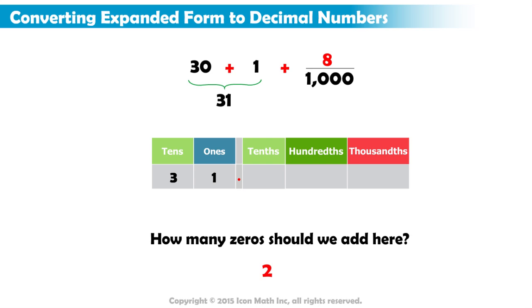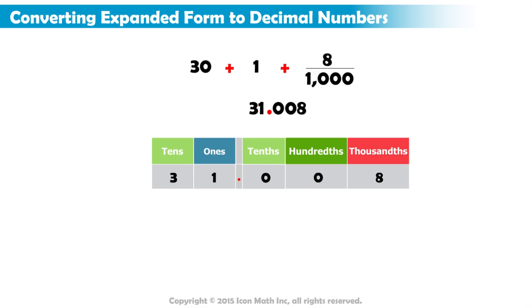Your answer should be 2 zero digits, because 2 zero digits plus 1 digit, the 8, gives us 3 digits. So we write a zero in the tenths place, and a zero in the hundredths place, and the 8 goes into the thousandths place. And this is the final number, thirty-one and eight thousandths.